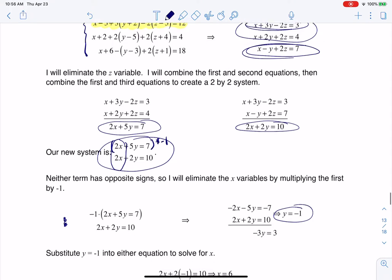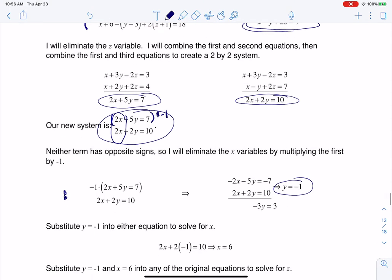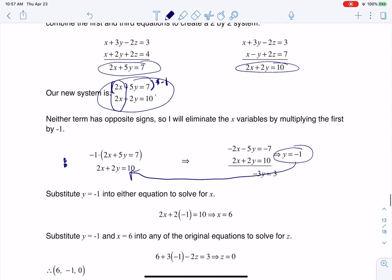And then it's all a matter of the back sub. So I'm going to take y equaling negative 1, and I'm going to plug it into that equation just because I can, and I get x equaling 6.